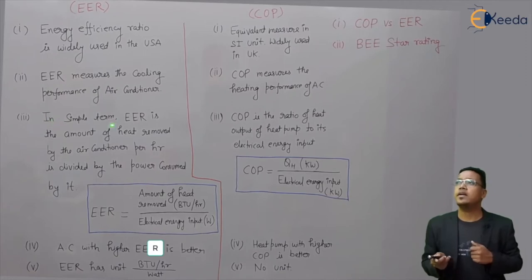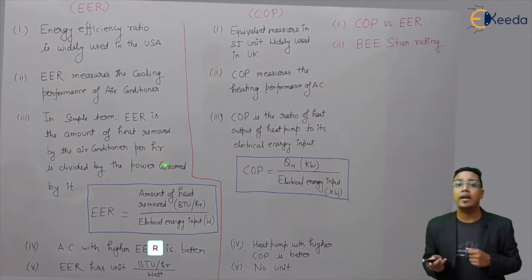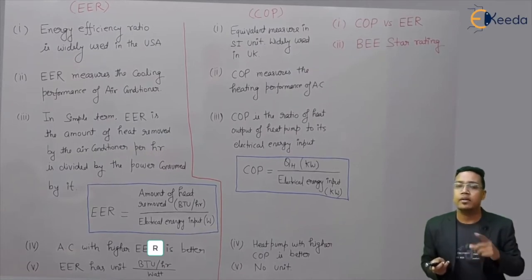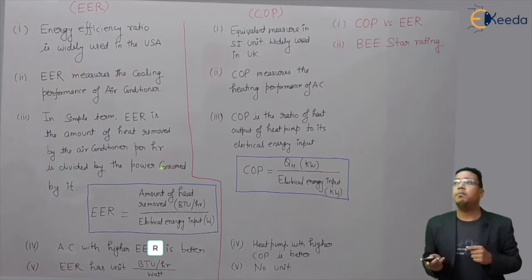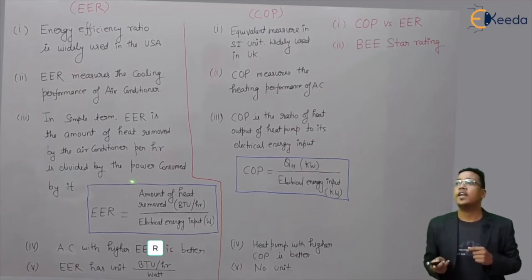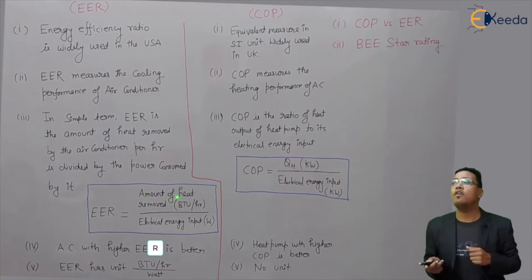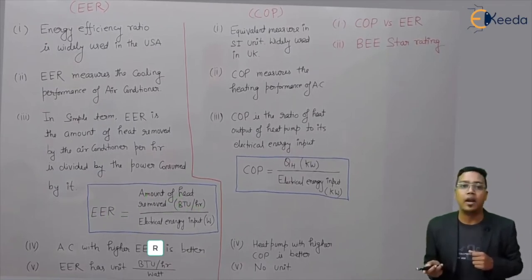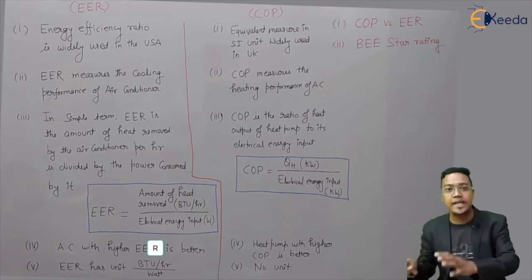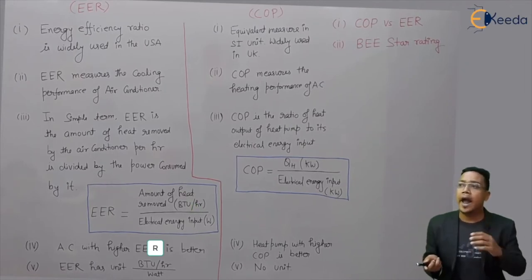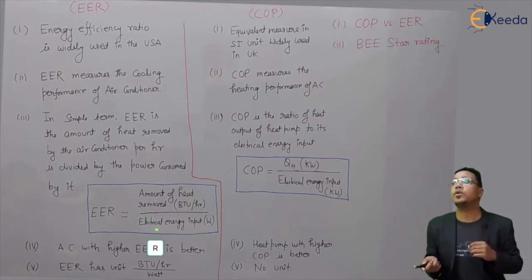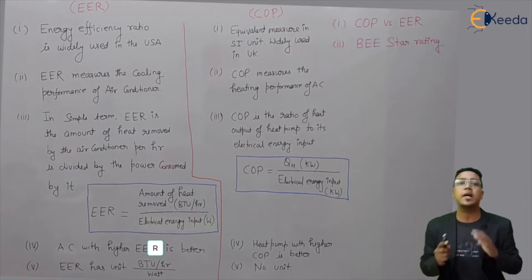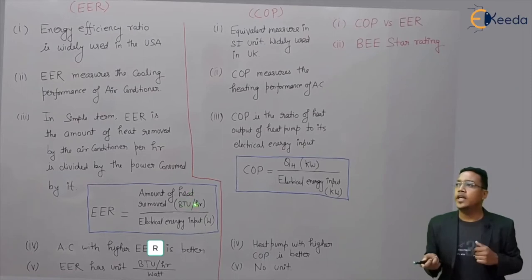In simple terms, EER is the amount of heat removed by the air conditioner per hour, divided by the power consumed. From this definition, we can write: EER equals the amount of heat removed from a storage space per hour in BTU per hour, divided by the electrical energy input in watts. Both these quantities give us the EER ratio. Higher EER means lower electrical energy input, so higher EER is better.